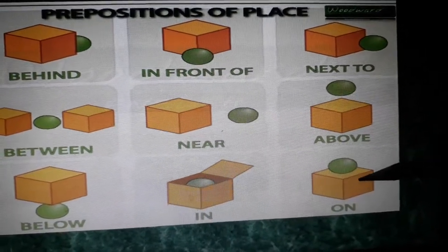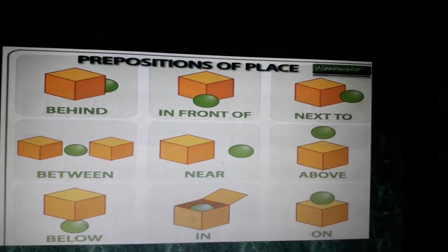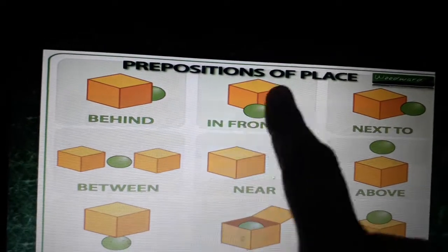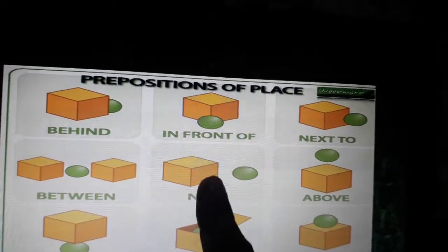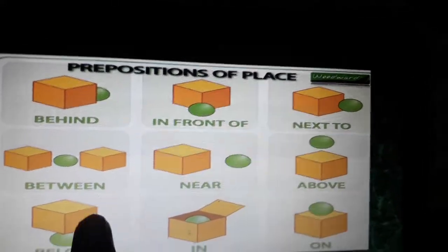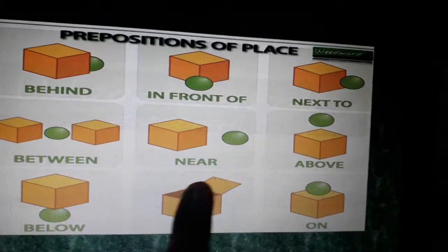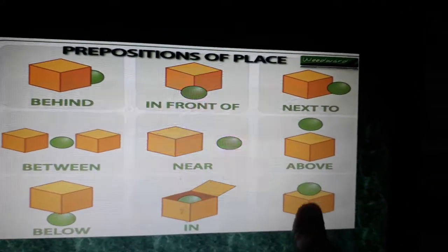The ball is in the box — that is 'in.' Here the ball is on the box — it is touching the surface, so that is 'on.' Let's see the pictures again carefully: behind, in front of, next to, between, near, above, below, in, and on — the ball is touching the surface of the box.